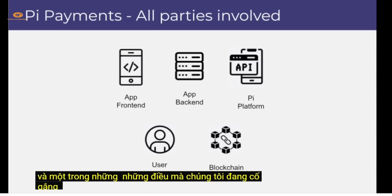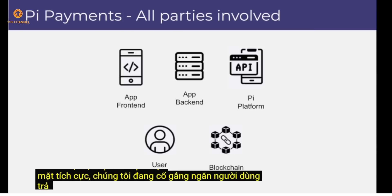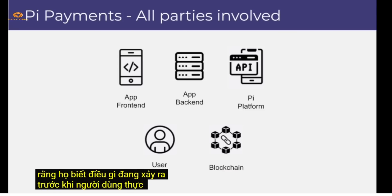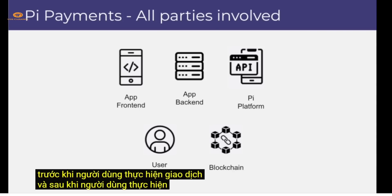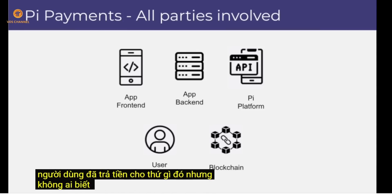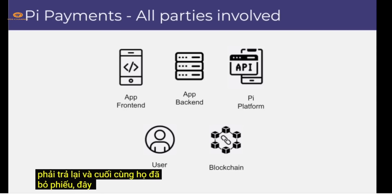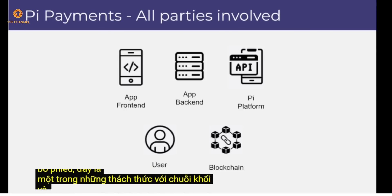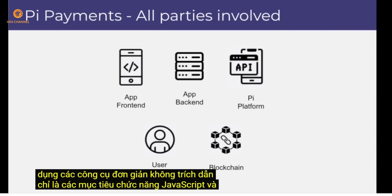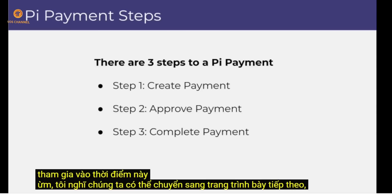One key goal is to prevent double payments caused by bugs on either the Pi side or the app side. We want everyone to confirm they're aware of what's happening before and after the user makes the transaction — so we never end up in a state where the user paid but nobody knows about it, forcing them to pay again. This is one of the challenges with blockchain, and we're solving it with simple JavaScript function calls and HTTP API calls — no advanced blockchain tech required.